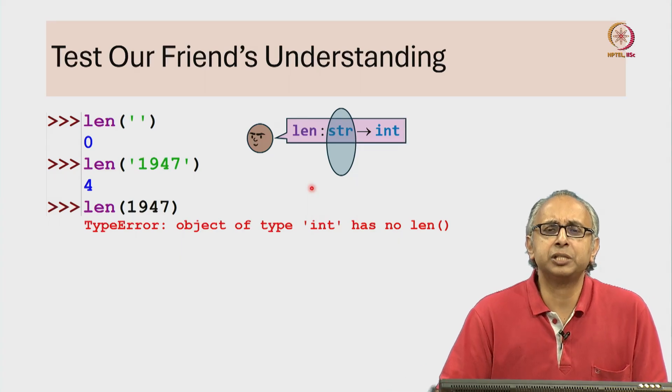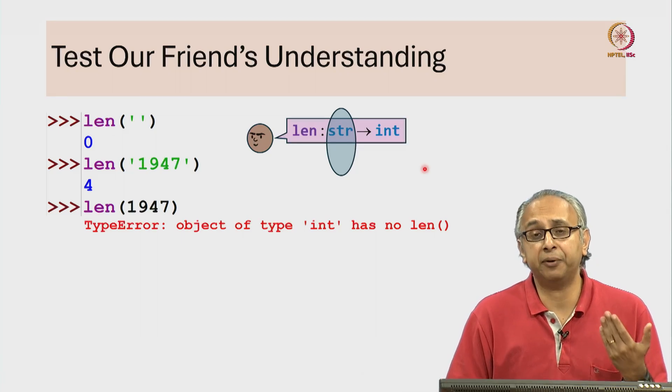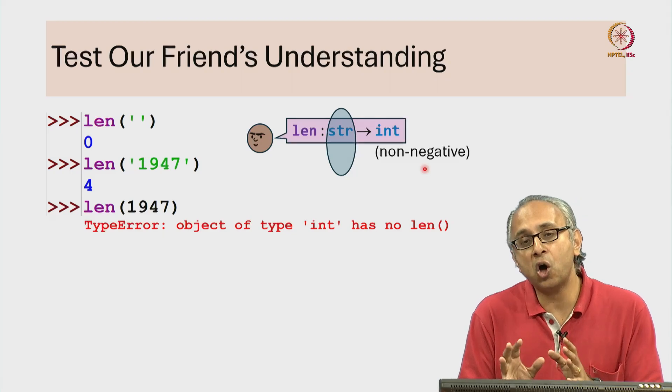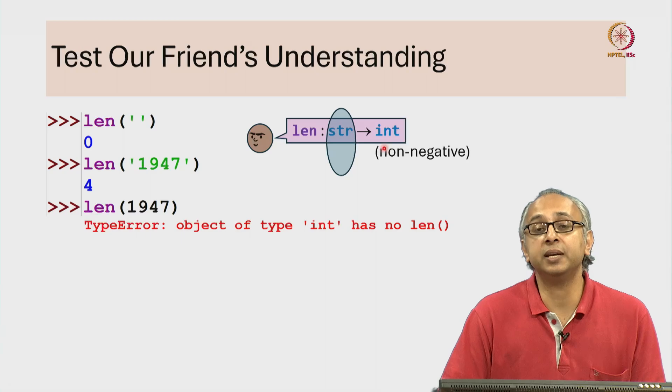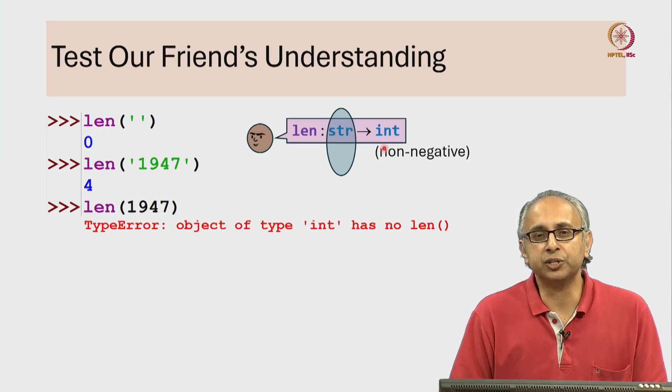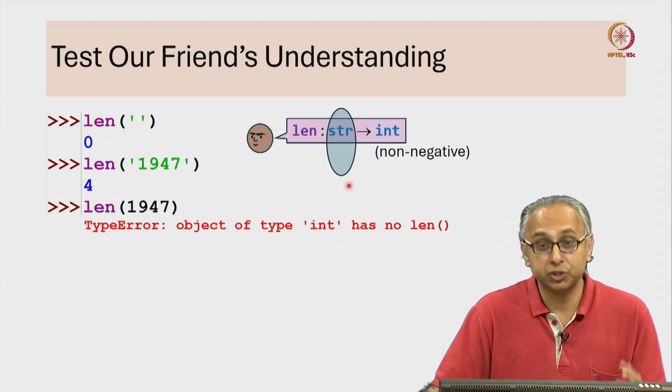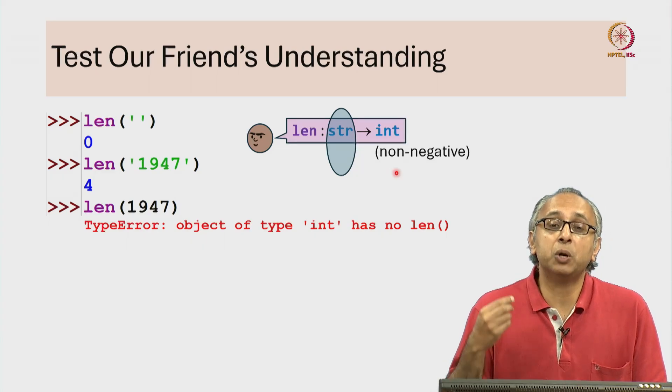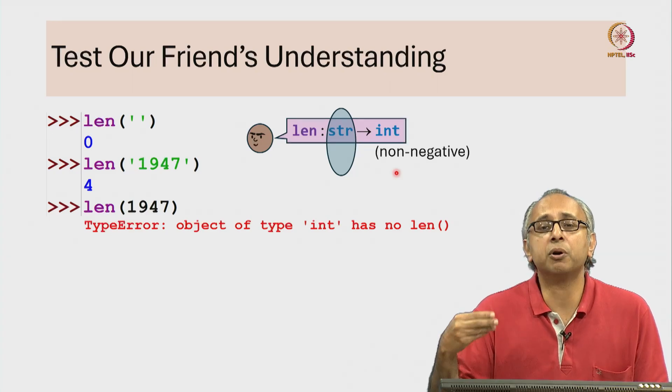You might argue that even what they said about the output is not strictly correct because the len function will always return a non-negative int. Whereas our friend says the output is always an int which could include negative integers. Now, unlike this first error which is actually an error, this second part of the statement is actually not an error. The len function will always return a non-negative int meaning either a 0 or a positive int.